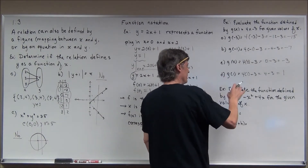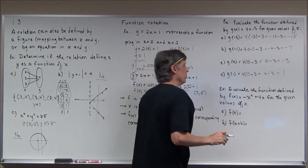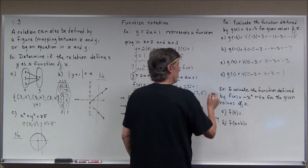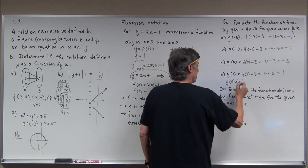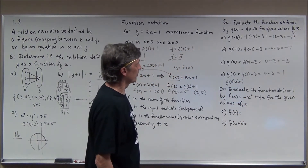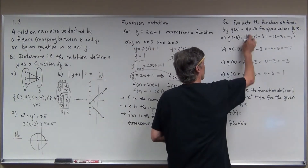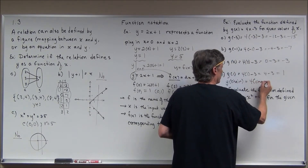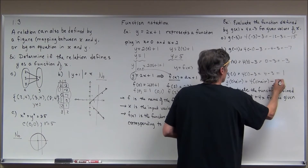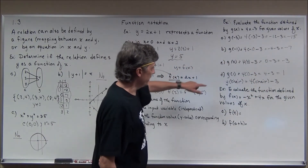One of my teachers explained plugging in something other than a number using the idea of 'what is g of chair?' We're not going to plug a chair in — it wouldn't be in the domain — but the idea is that whatever goes in for x replaces the variable in the rule. So g of chair would equal 4 times chair minus 3. Whatever you input gets substituted in.